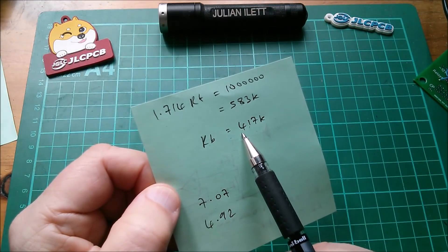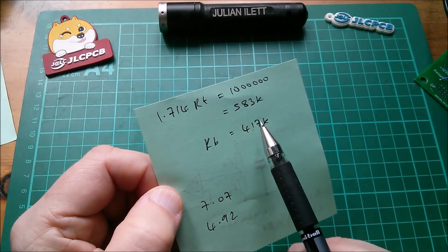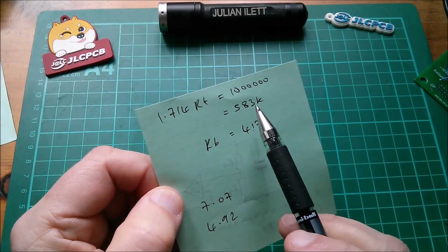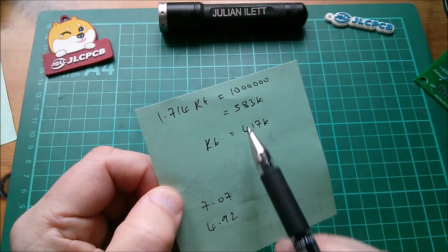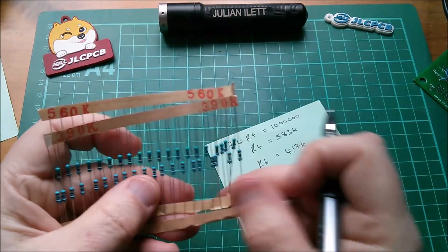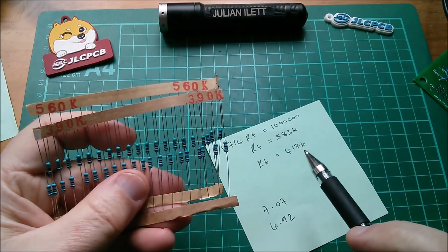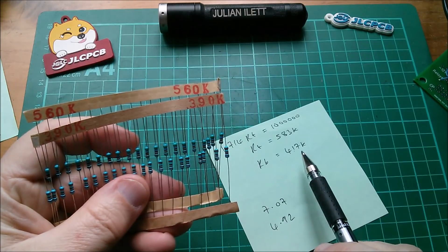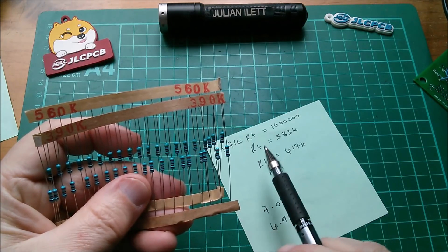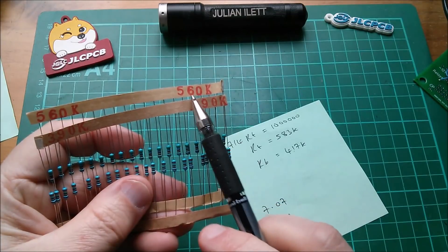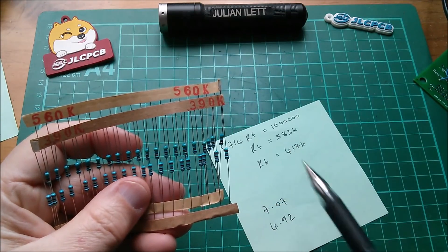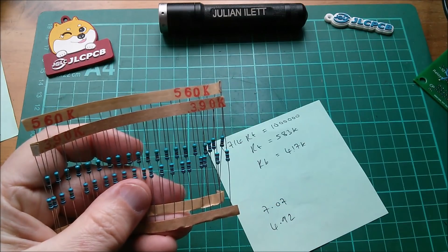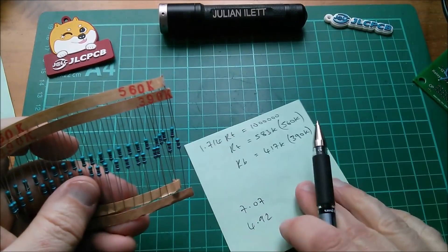Given that we could deviate a bit from this million, what we could do is either take Rb and Rt up a little bit, or we could bring them both down a little bit. How about we bring them both down? We make Rb 390k, which is a bit less than 417k, we make Rt 560k, which is a bit less than 583k.